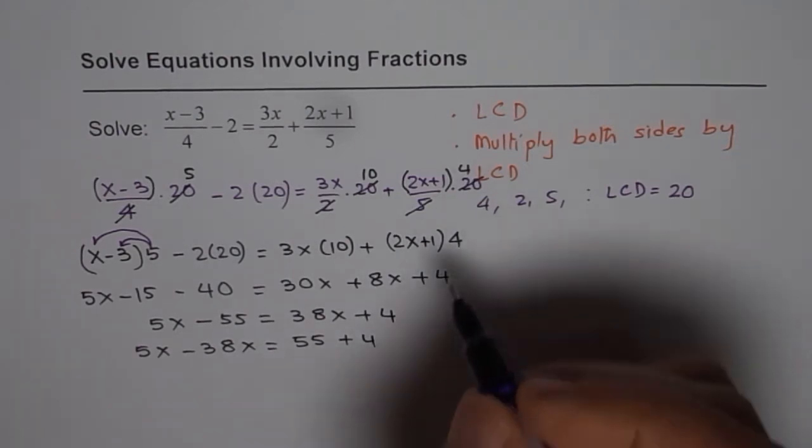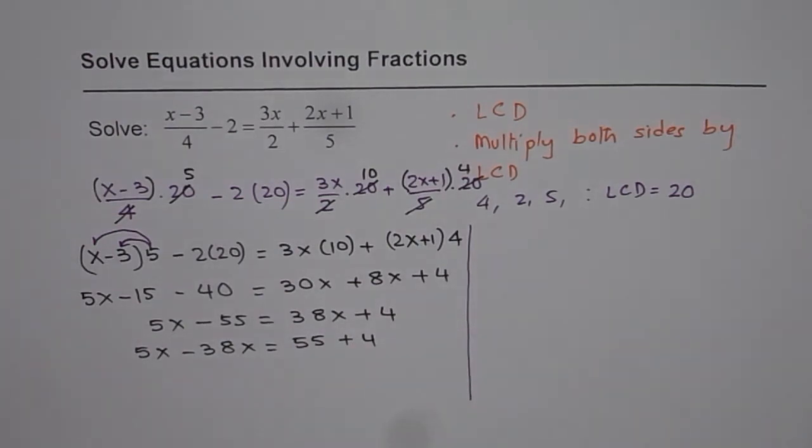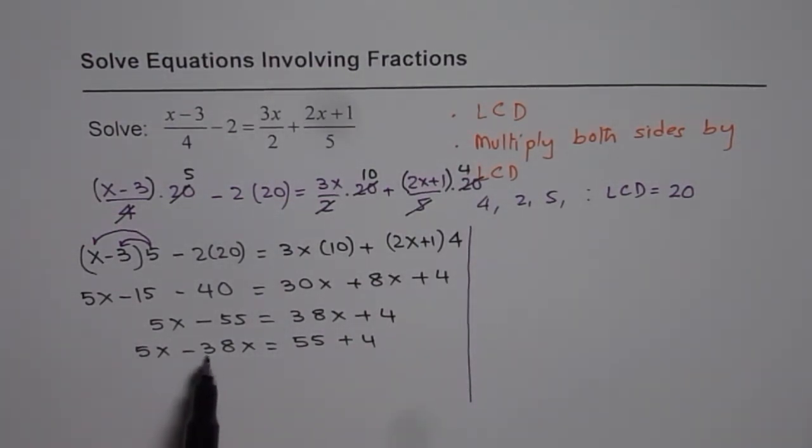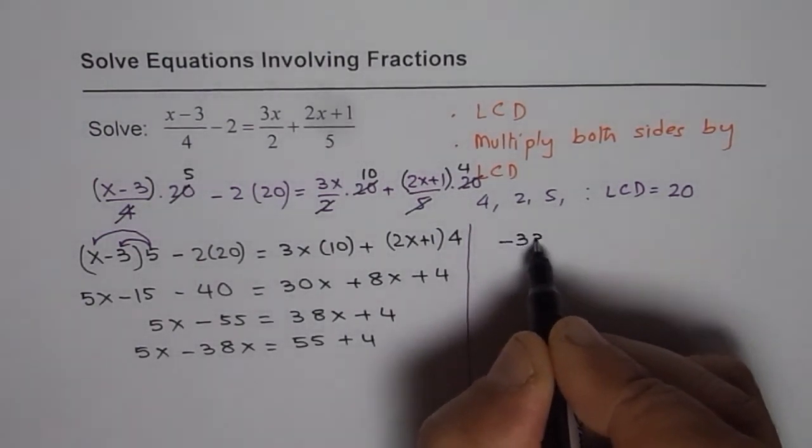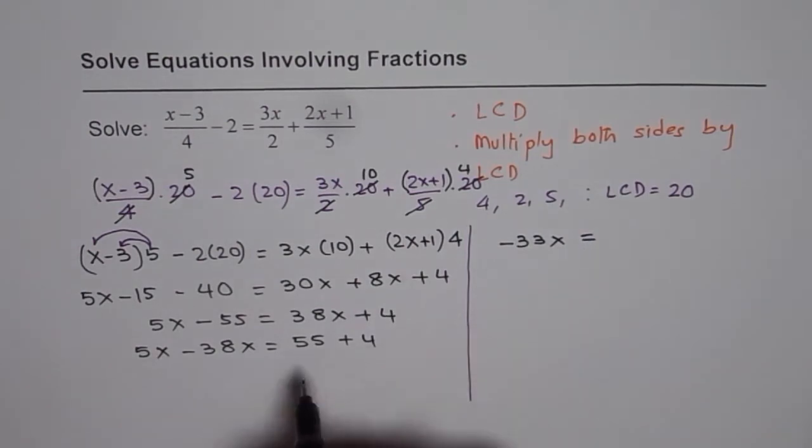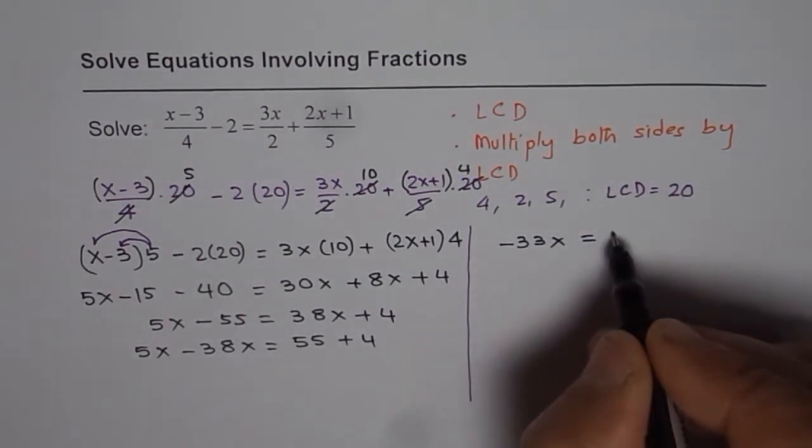Let me solve the rest of the question on the right side of this page. So 5x minus 38x will give us negative 33x, equals to 55 plus 4 is 59.